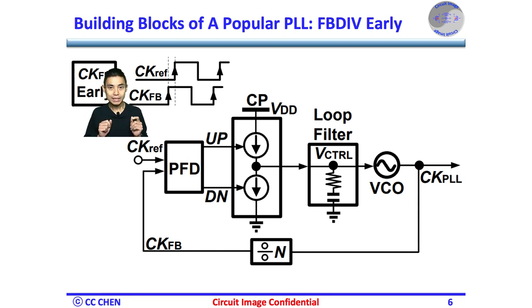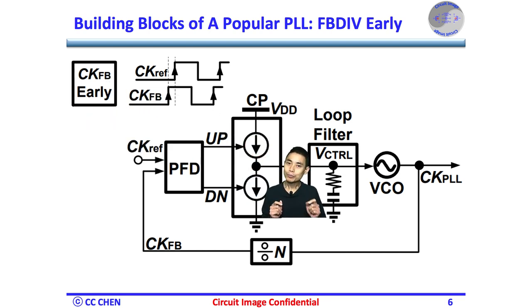On the other hand, if the opposite condition occurs, for example, the divider edge comes before the reference edge, the charge pump will pull the charge out of the loop filter to slow down the VCO and feedback divider.